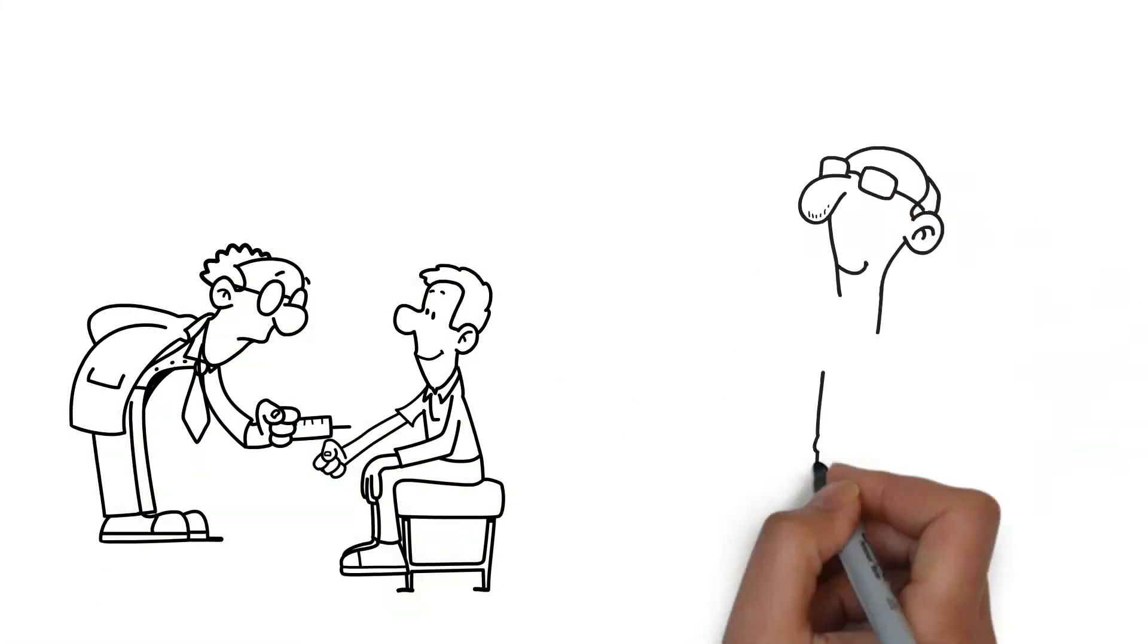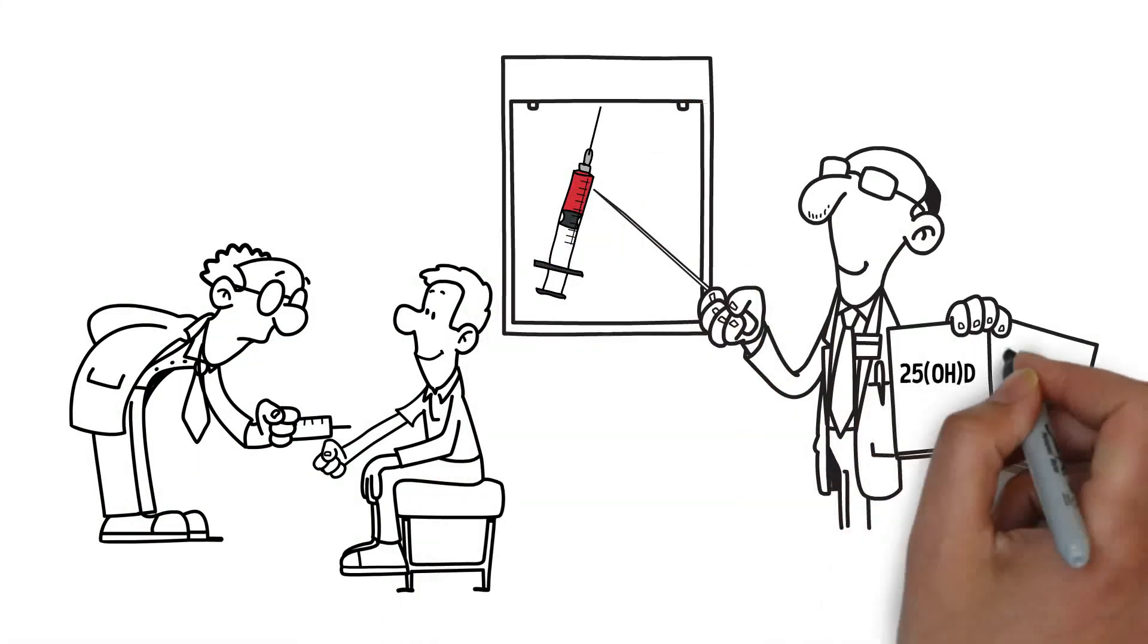The only way you'll know for sure if you have optimal vitamin D is to have your 25 OHD blood level tested.